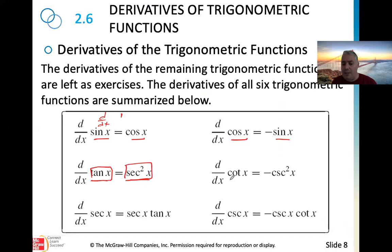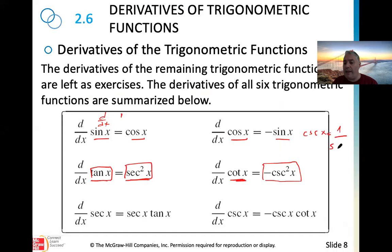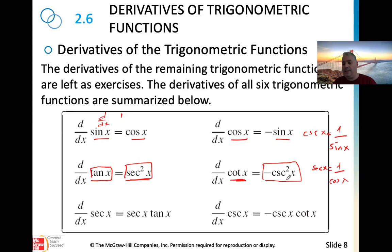Similarly, the derivative of cotangent of x is negative cosecant squared x. Note that secant x is defined as 1 over cosine of x, and cosecant x is defined as 1 over sine of x. So the derivative of cotangent x follows from these definitions.